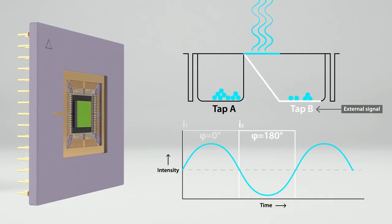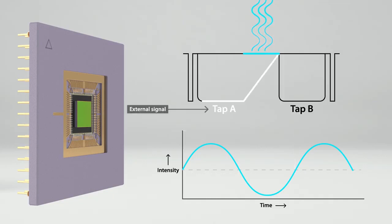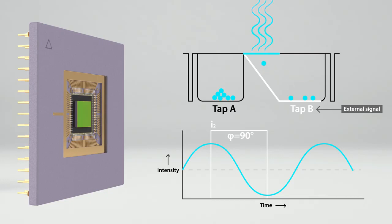The image sensor modulation is shifted relative to the excitation light. Then, a measurement is performed at a phase angle of 90 degrees. The charge carriers collected in tap A create image I2. Tap B samples the information at a phase angle of 270 degrees, creating image I4.